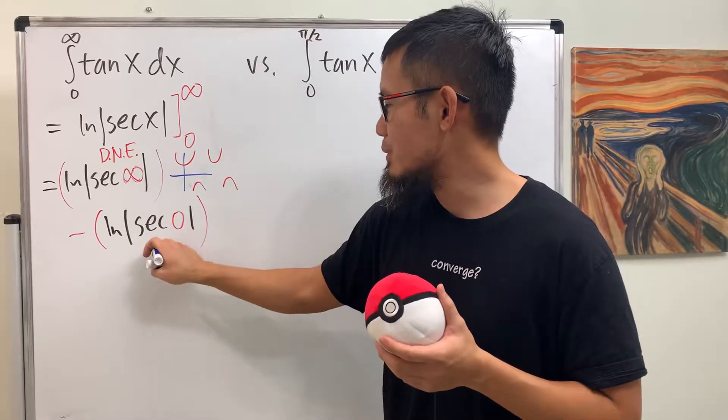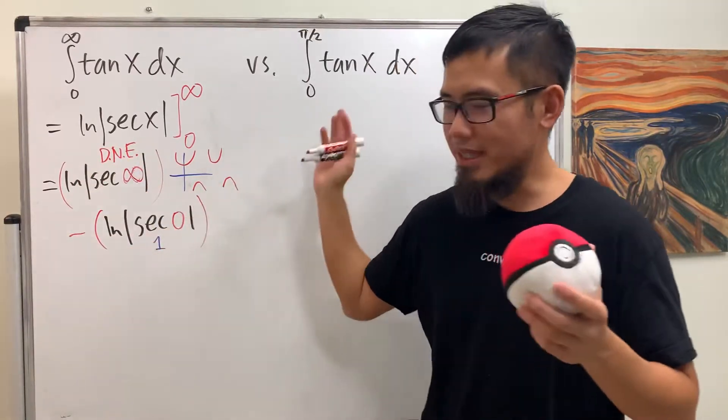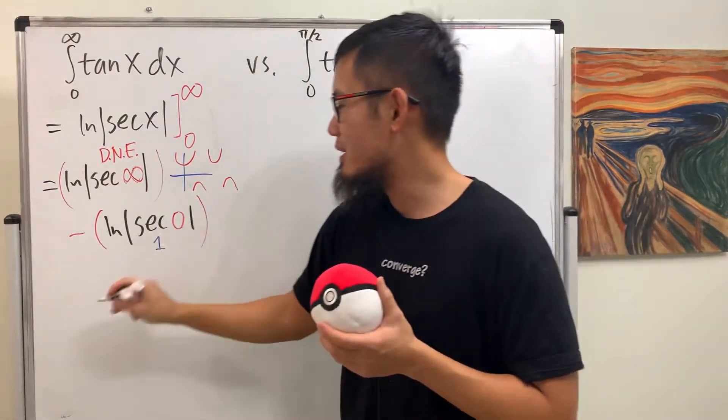secant of 0 equals 1. But that doesn't matter. If you have does not exist plus or minus or whatsoever, this just doesn't exist.